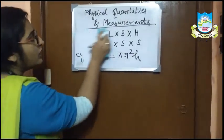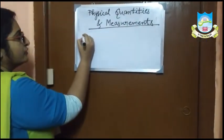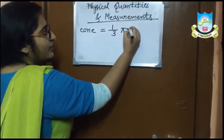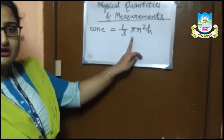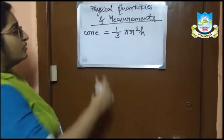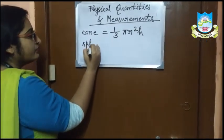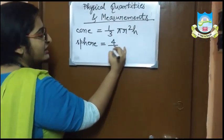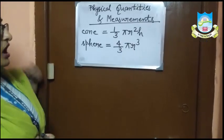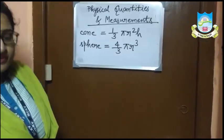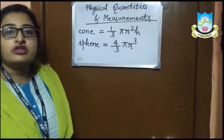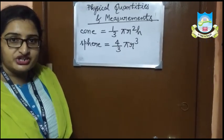The volume of a cone is (1/3) π r² h, where π is 22/7, r is the radius, and h is the height. The volume of a sphere is (4/3) π r³, where π is 22/7 and r is the radius. So here we have learned the formulas for finding out the volume of these 3D shapes.